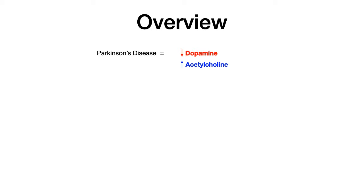Parkinson's disease can be thought of as either a decrease of dopamine or an increase of acetylcholine. I know what you're thinking — it has nothing to do with acetylcholine, it's all dopamine. And technically you would be correct. But for the purposes of understanding how these drugs work, I want you to think about Parkinson's disease as a decreased amount of dopamine or an increased amount of acetylcholine.